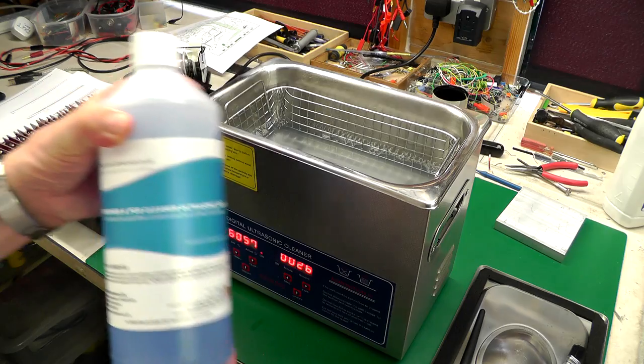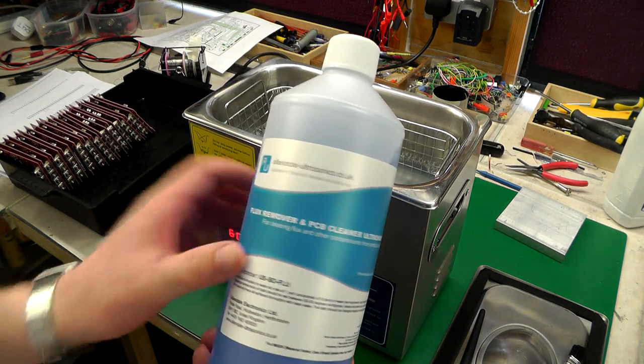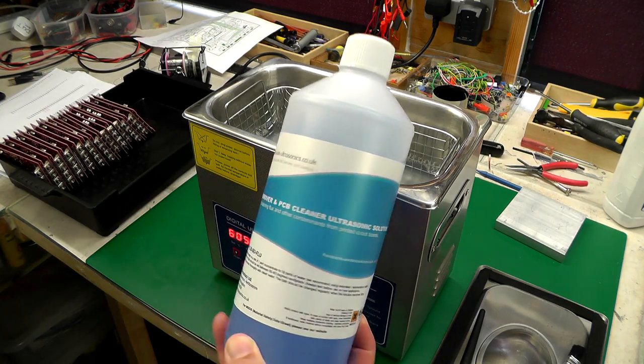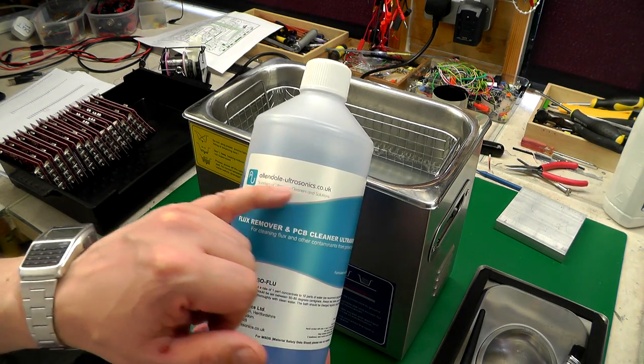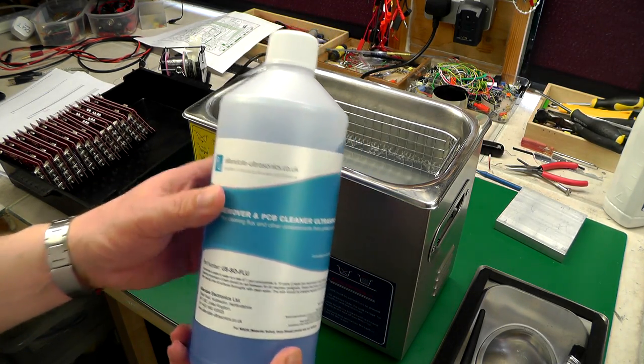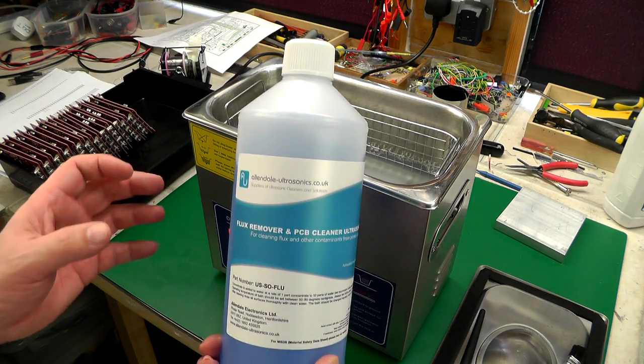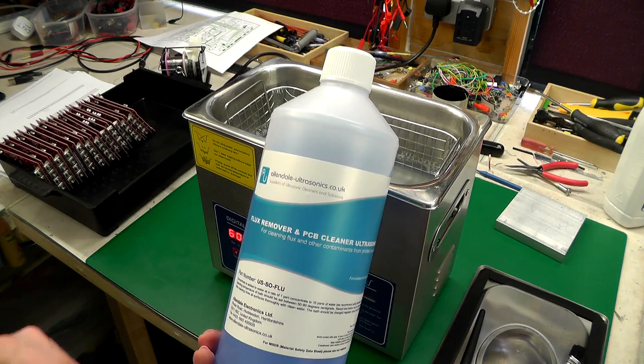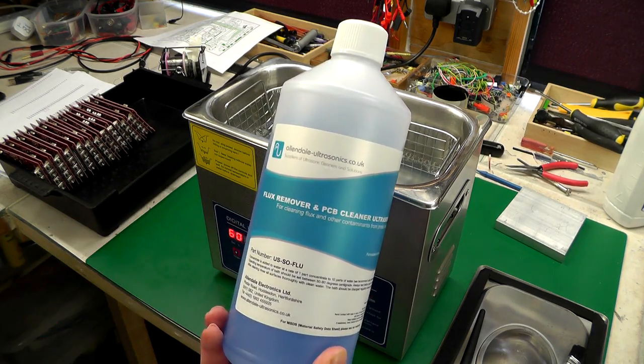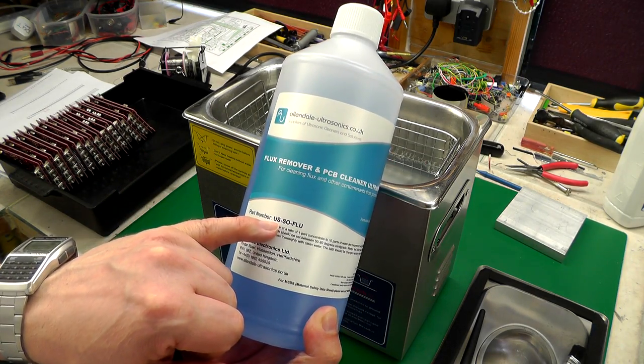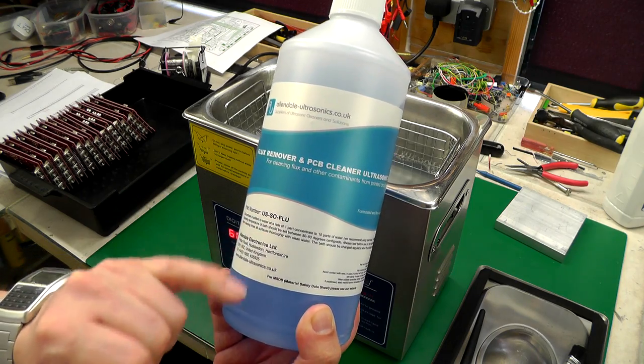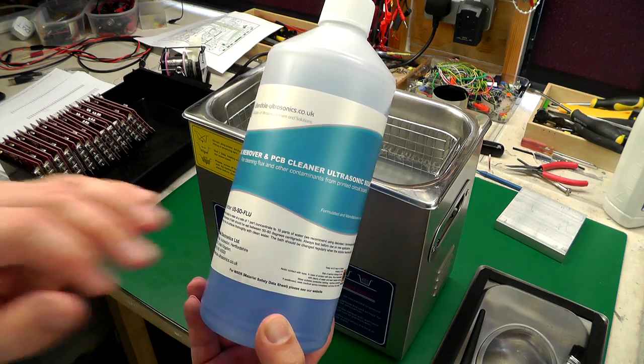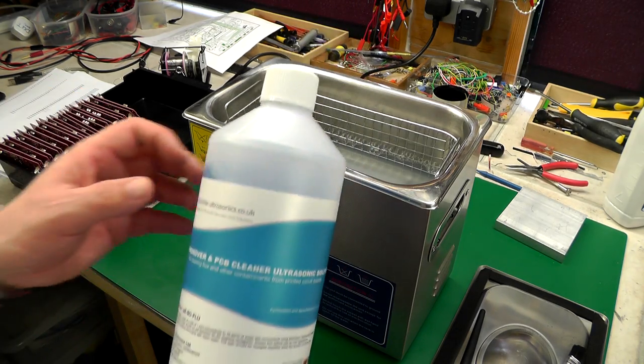So what we have to use is a proper cleaning solution, water based. This is a flux remover and PCB cleaner ultrasonic solution from Allendale Ultrasonics in the UK. I haven't tried a great lot of different cleaning products, maybe about the second or third one that I tried seem to work pretty good and this is it. This is part number US-SO-FLU and it's a concentrate, so it's one part concentrate to 10 parts water.